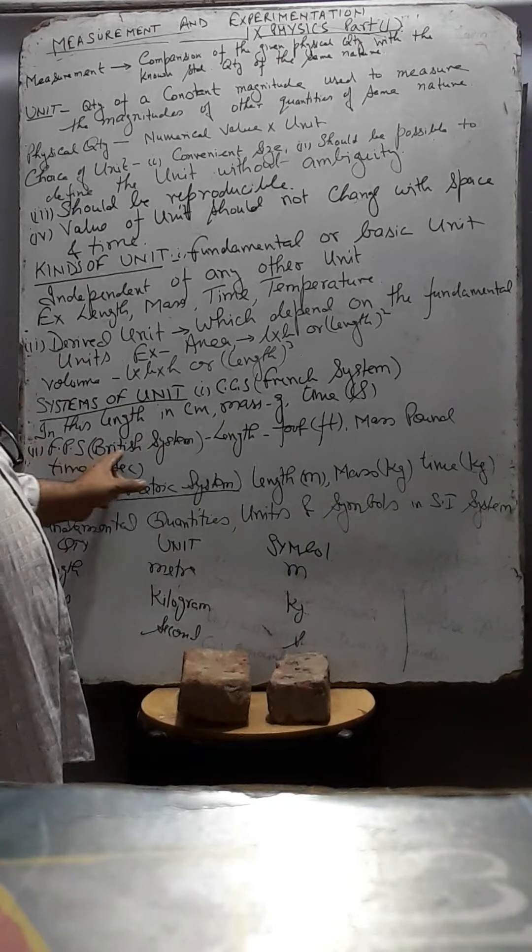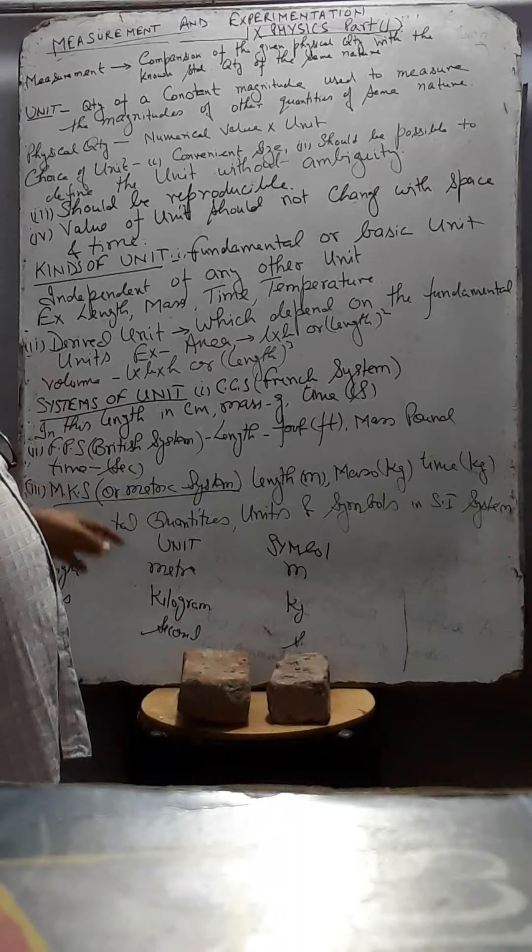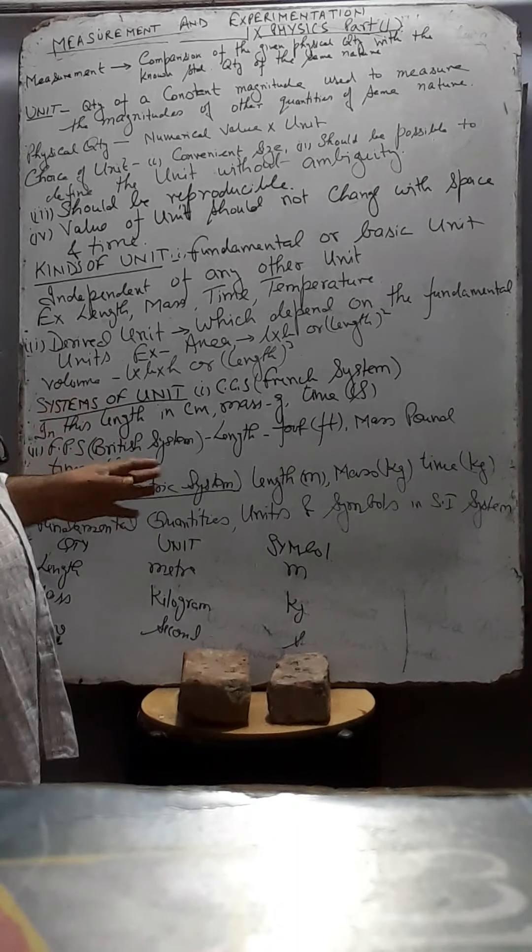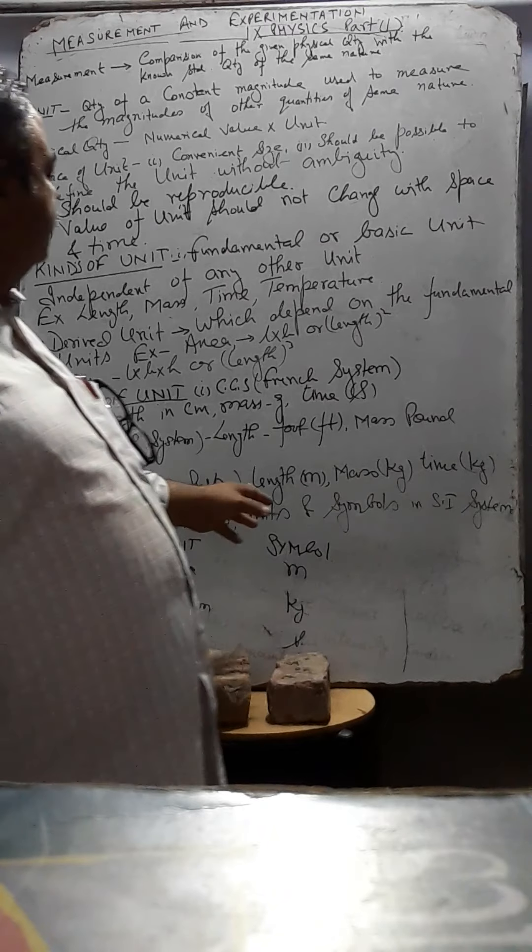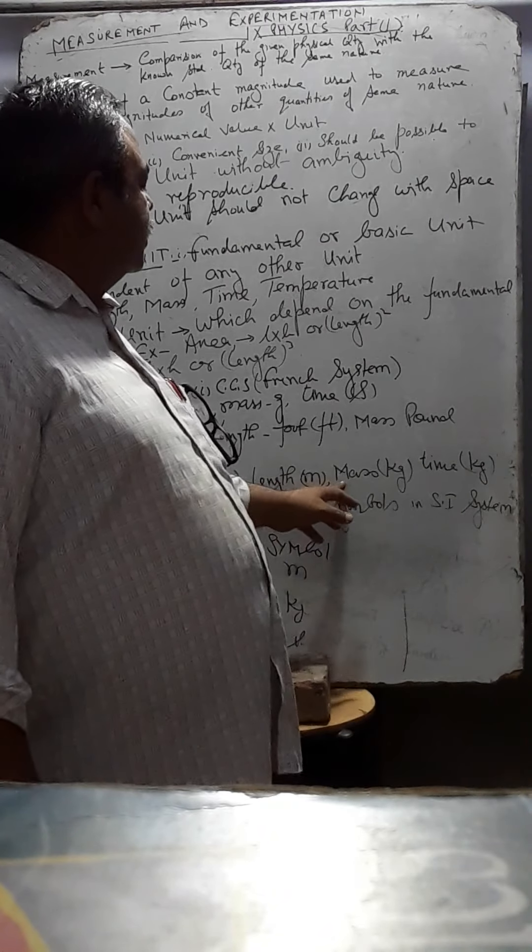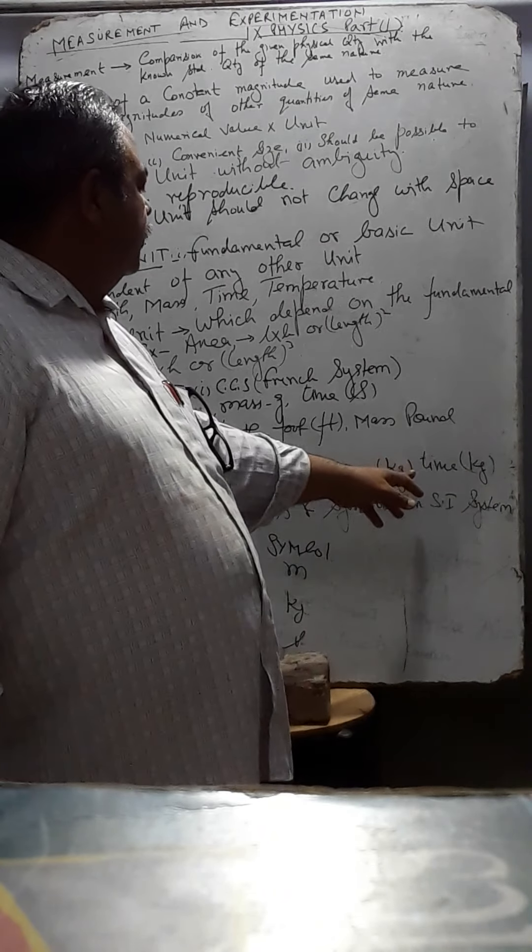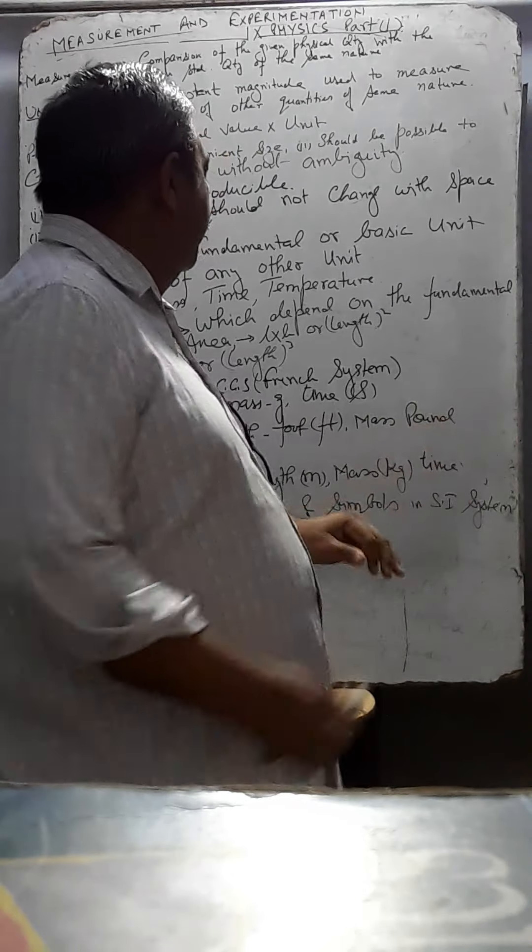So British pound, British system it was FPS system. Then the system came finally, the MKS system or metric system in which the length is measured in meter, mass in kilogram, time in seconds.